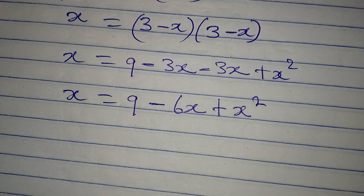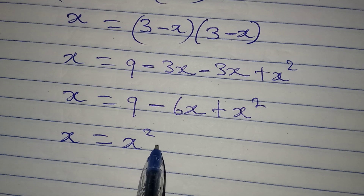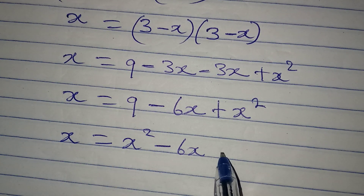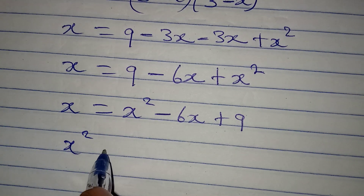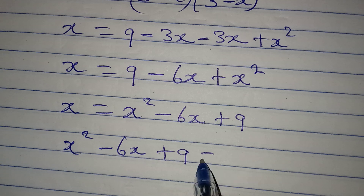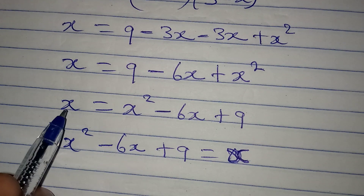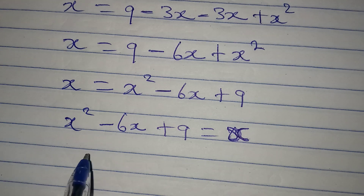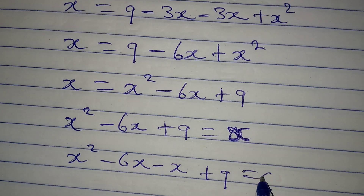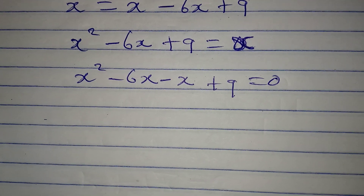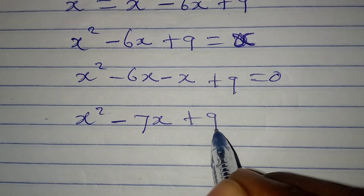So x is equal to 9 minus 6x plus x squared. Now I want us to rearrange this. So I have x equal to x squared minus 6x plus 9, which is the same as x squared minus 6x plus 9 equal to x. Bringing everything to the left, we have x squared minus 6x minus x plus 9 equals 0, so x squared minus 7x plus 9 equals 0.